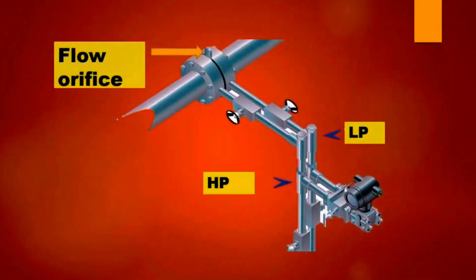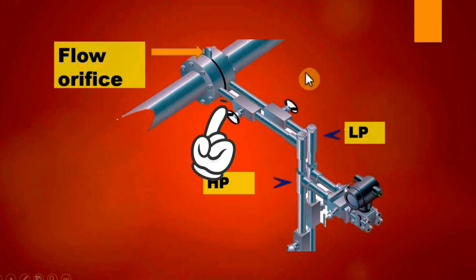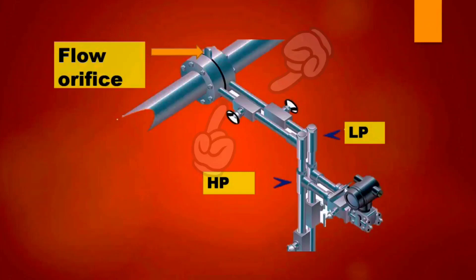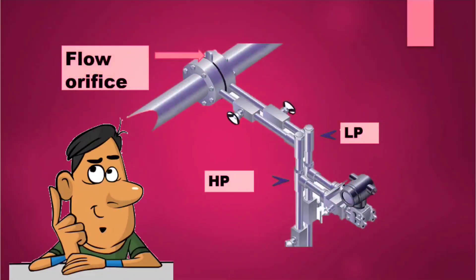Friends, now let us see how flow measurement is done using flow orifice. In this image you can see a flow orifice. The port before the flow orifice is called the HP port or high pressure port. The port after the flow orifice is called the LP port or low pressure port.